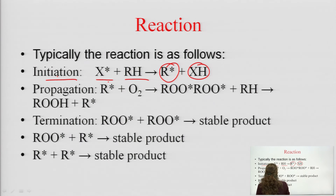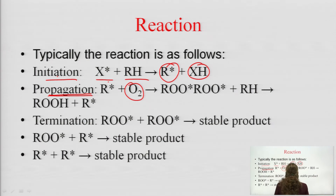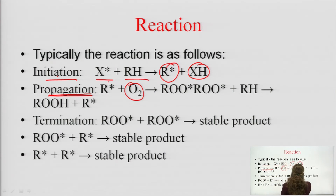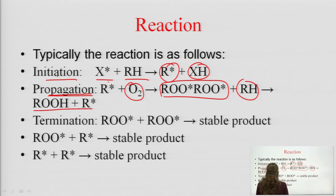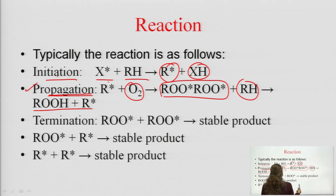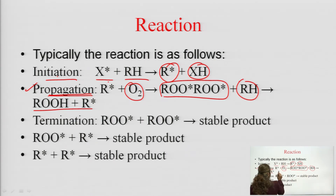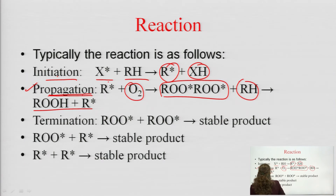In the propagation step, the R compound that separated reacts with oxygen. The R group reacts with O and forms a new group, which again reacts with the RH group, resulting in the formation of ROOH plus R. This is a propagation chain reaction — it keeps propagating until we terminate it. This chain will keep propagating, which is why it is known as a propagation reaction.